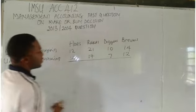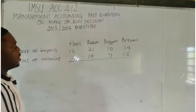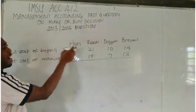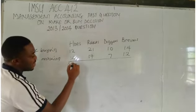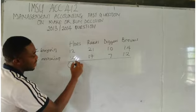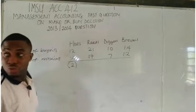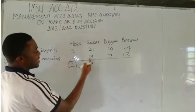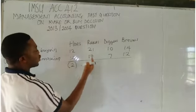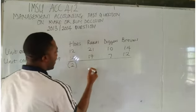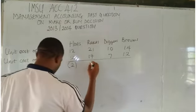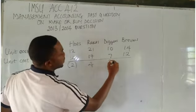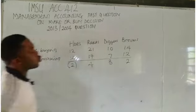Now let's get the difference between the buy and make costs. For holes, the cost of making (14) is higher than the cost of buying (12), so it gives a negative difference of 2. For rigs, the cost of making is lesser than the cost of buying, giving a positive difference of 4. This one gives 4, and this one is 2.